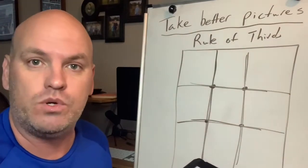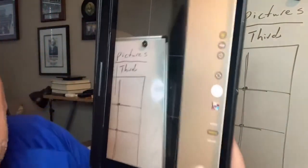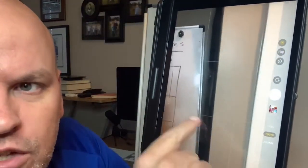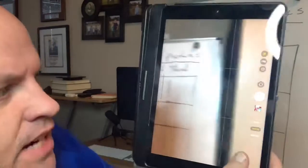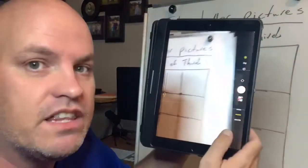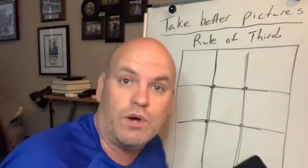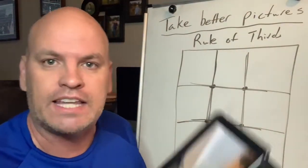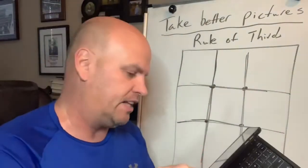Maybe some of you have seen this inside of the photo app. You can see there are grid lines — it's the tic-tac-toe board. So when you're taking the photo you can use that, and also when you go to edit your photo you can make it look like that. Pull up those grid lines.